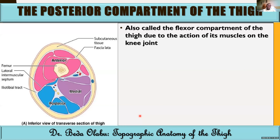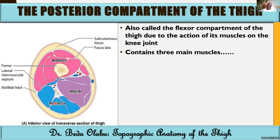Let's focus on the posterior compartment — the flexor compartment. It's called the flexor compartment because these muscles flex the knee joint. If a muscle in the posterior thigh contracts and inserts into the bone of the leg, it will move the leg posteriorly — that's flexion of the knee. There are three major muscles in this compartment, plus one that is partly in the medial compartment — I'll talk about it.